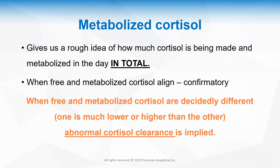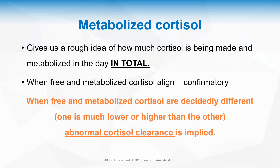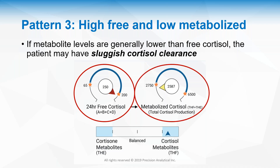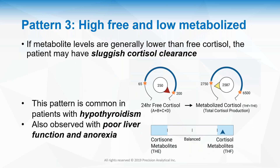What happens when metabolized and free cortisol tell different stories and point in opposite directions? That implies abnormal cortisol clearance. Pattern three is sluggish cortisol clearance with high free cortisol. If you only ran a saliva test and saw that high free cortisol, you'd think to suppress them with phosphatidylserine, theanine, maca, meditation. But if the Dutch Test shows their metabolized cortisol is low, they have slow cortisol clearance — suppressing them is probably not the right option. The most common reason for this pattern is hypothyroidism, either overt or subclinical.